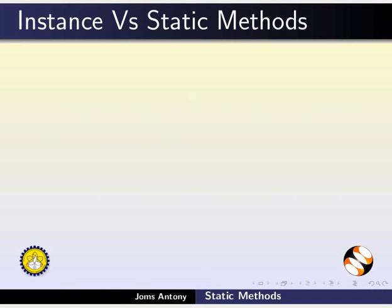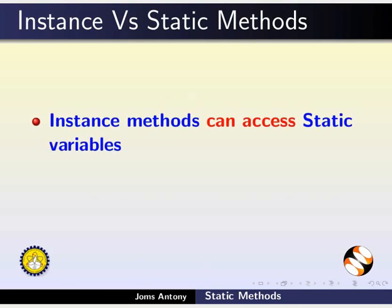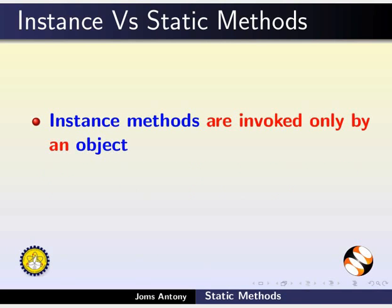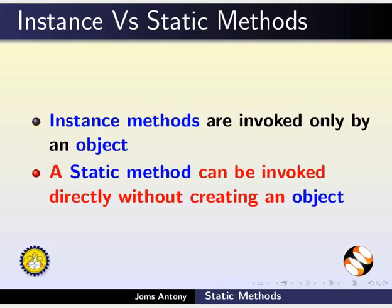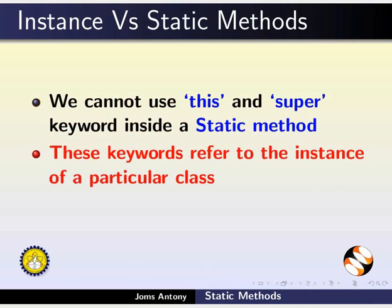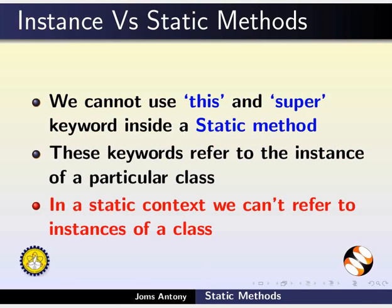Let us explore the differences between instance method and static method. Instance methods can access static variables, whereas a static method can directly access and modify only static variables. Instance methods are invoked only by an object, whereas a static method can be invoked directly without creating an object. We cannot use the this or super keyword inside a static method, because these keywords refer to the instance of a particular class. In a static context, we can't refer to instances of a class.